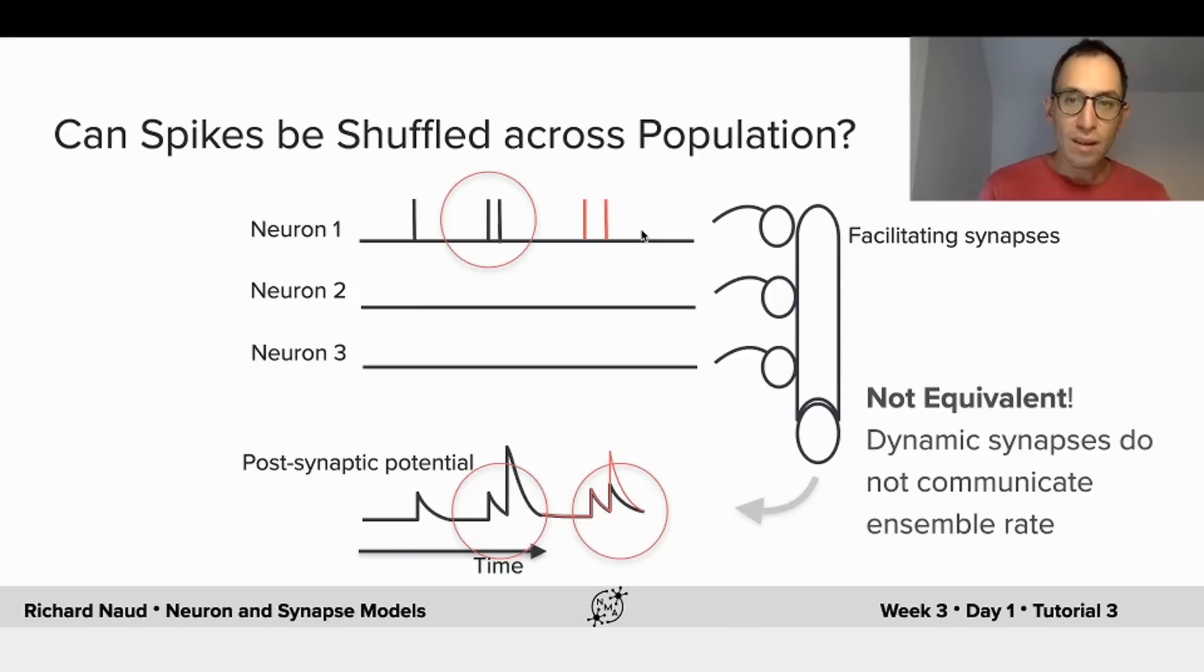So in the presence of short-term dynamics, you cannot shuffle the spikes from one neuron to the next, because you need to preserve the particular structure of interspike intervals. Another conclusion from this is that synapses that are dynamic, that have the short-term dynamics, do not communicate the ensemble rate. They communicate something slightly different.